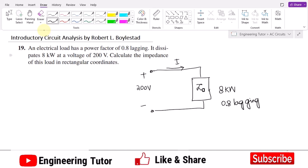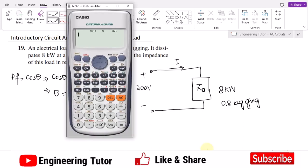So in order to find it out, I have this power factor here. I know that the power factor is equal to the cosine of theta. So cosine of theta is 0.8. In order to find the value of theta, it is equal to cosine inverse of 0.8.